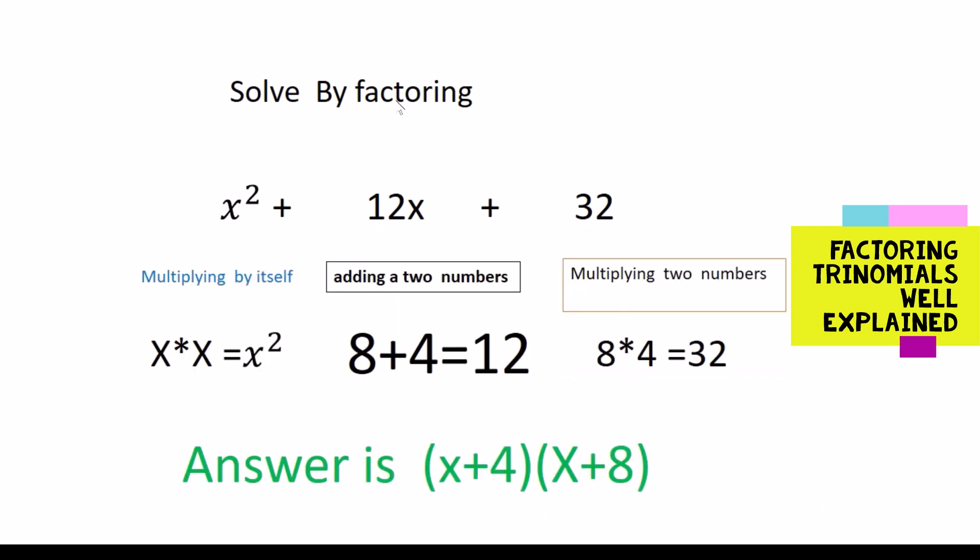As I explained, the x squared is when you multiply or times x by itself. When you combine two numbers it should give you 12 and when you multiply that number it should give you 32.